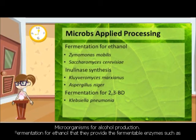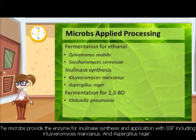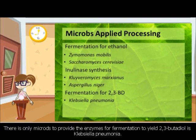Microorganisms for alcohol production: for ethanol fermentation, fermentable enzymes are provided by Zymomonas mobilis, which is a bacterium, and fungi including Saccharomyces cerevisiae. Microbes that provide inulinase enzymes for SSF include Kluyveromyces marxianus and Aspergillus niger. The only microbe providing enzymes for fermentation to yield 2,3-butanediol is Klebsiella pneumoniae.